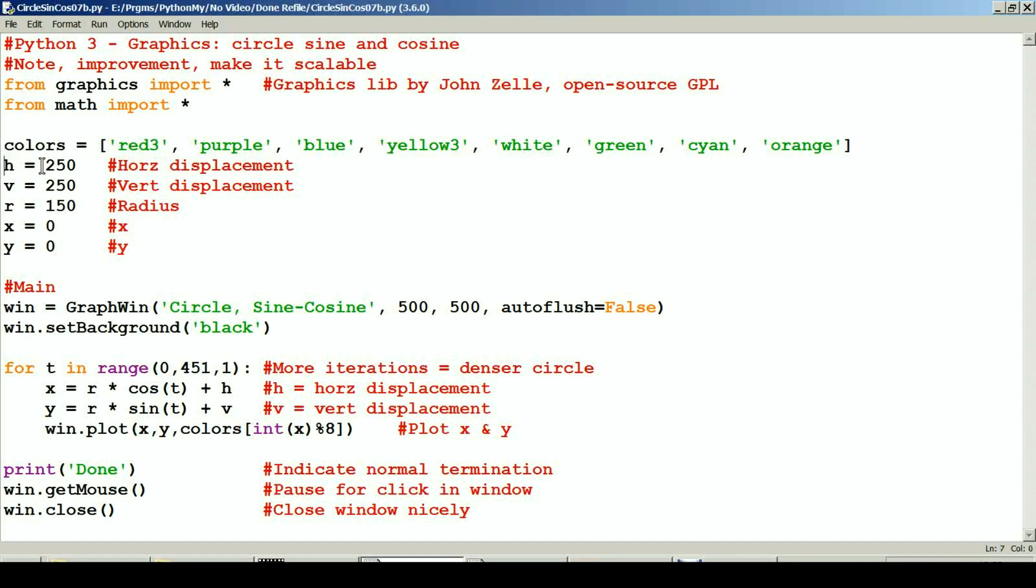The next line down here, this H equals 250. That's the horizontal displacement of the circle on the window. The V is the vertical displacement of the circle on the window. The R is the radius. X and Y are X and Y within the window.